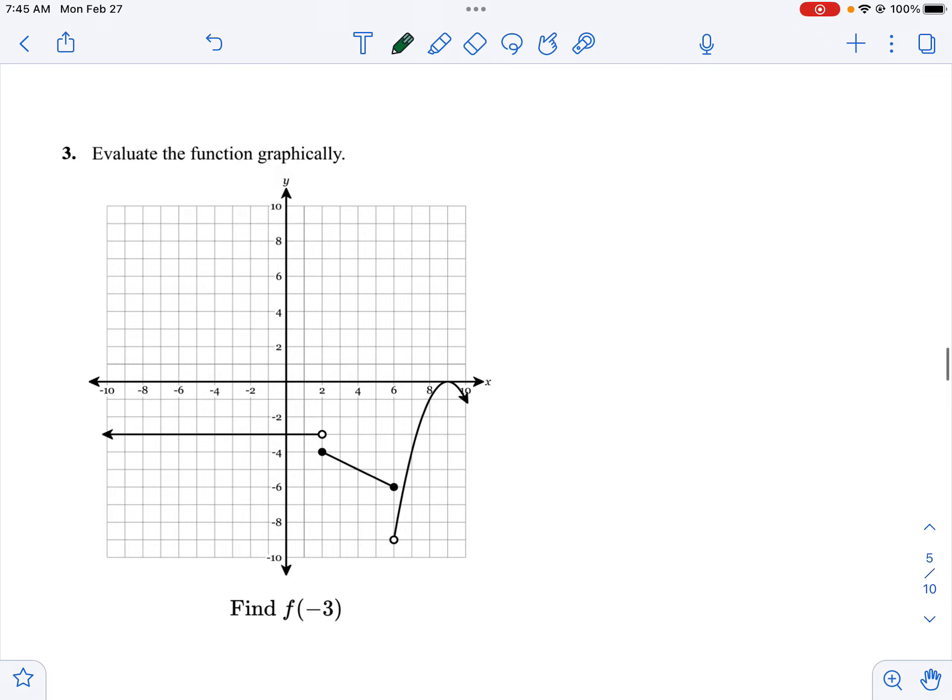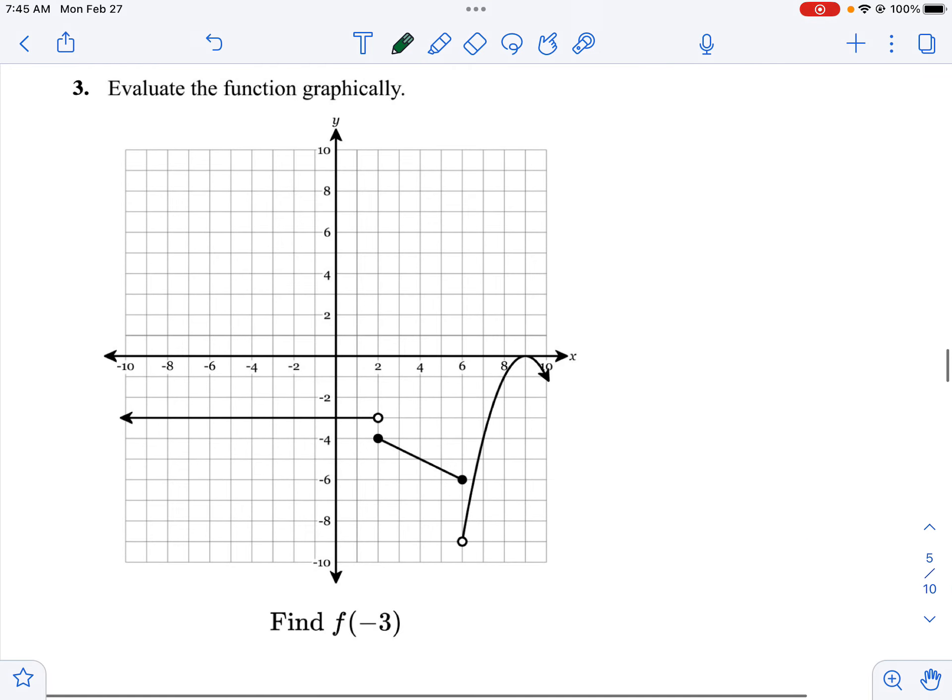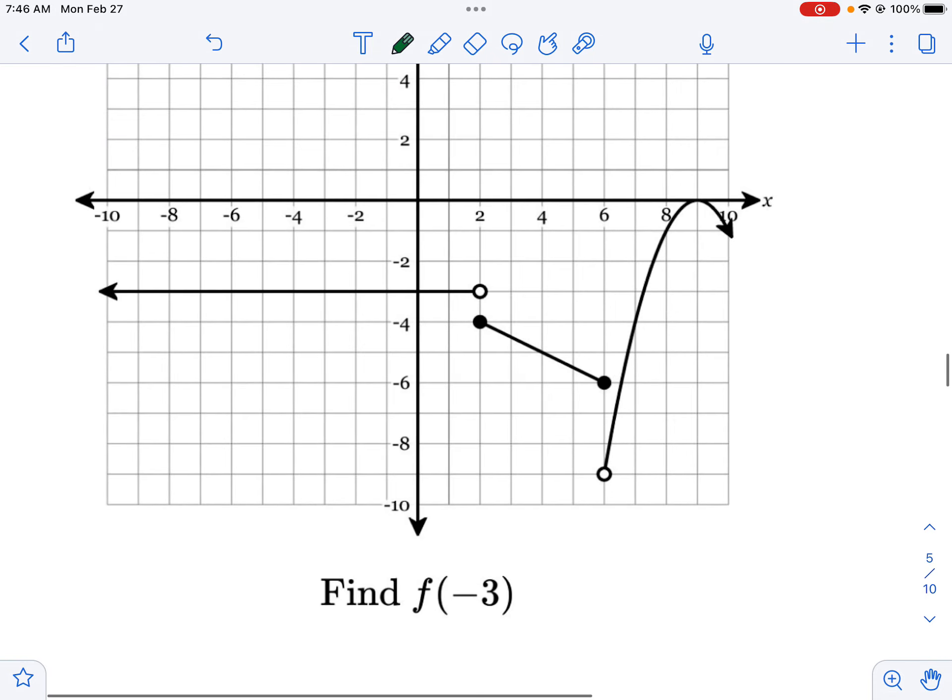Okay and then our last one. Again it's piecewise. You can see all the different pieces. And later this week we'll take a look at how would you write the equation for this. But today it's just evaluate. Find f of negative 3. So we're going to go left 3. Go down until we hit the graph and go over to see the output. And here it's negative 3 as well.